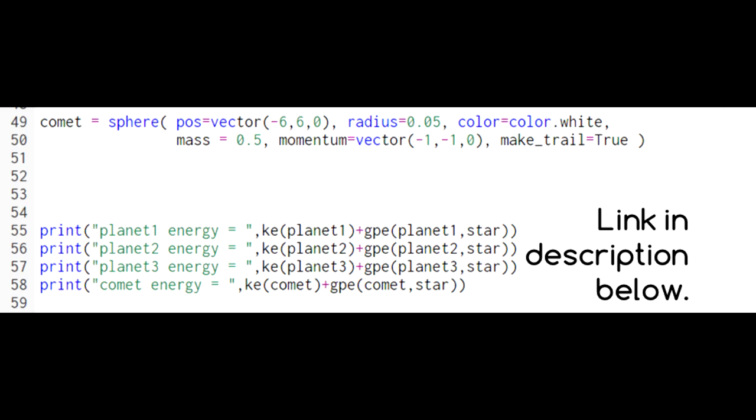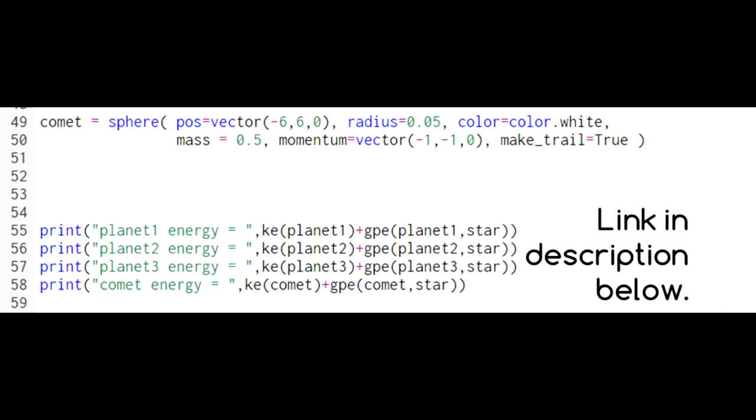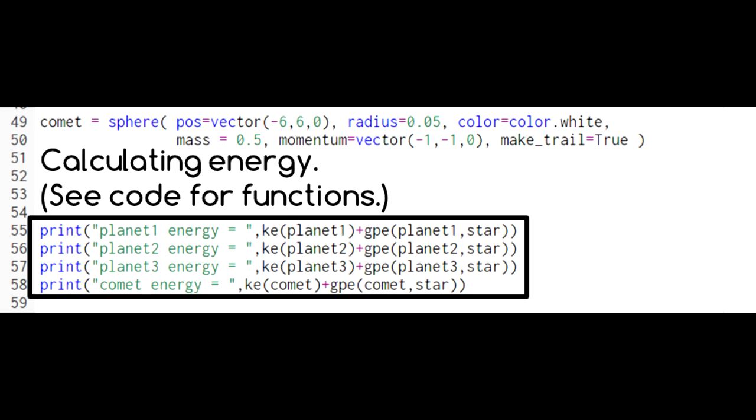In this code, which is available at a link in the description below, we've added a comet to our planetary system. We're also checking the energy of each of our celestial objects by adding their kinetic energy to the potential energy between each object and the star. For simplicity, we'll omit the potential energy between the planets and the comet, since those don't contribute much.